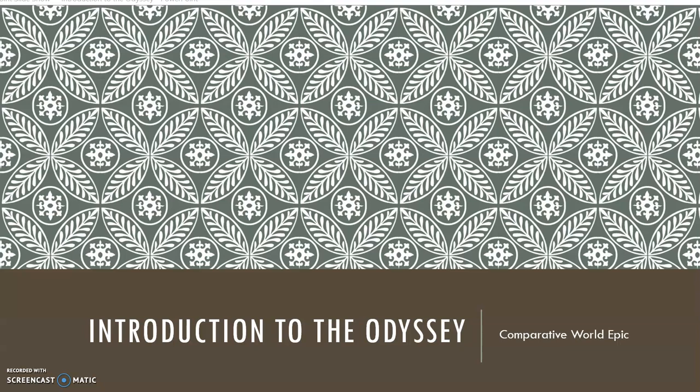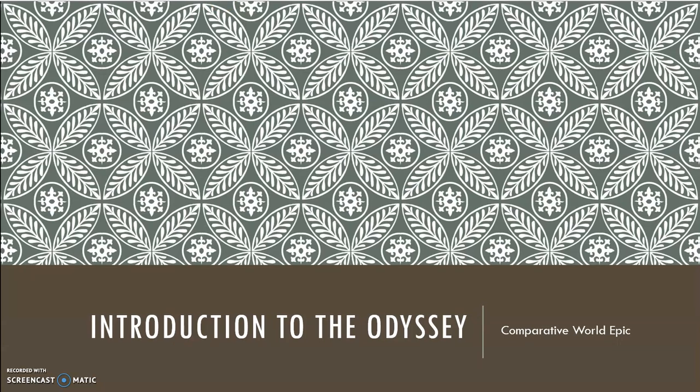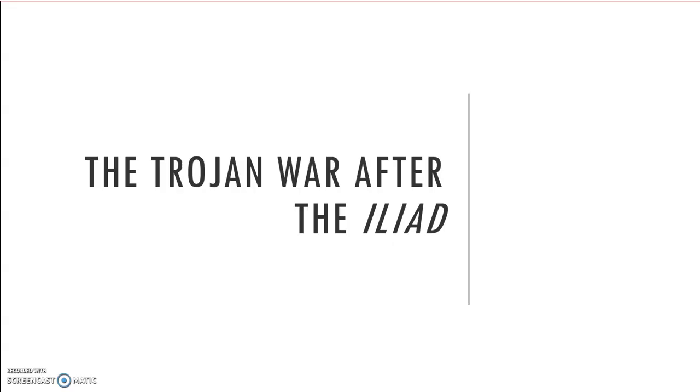On Tuesday, we will go ahead and jump right into reading the Odyssey. But first, let's spend the first part of our discussion talking about the end of the Trojan War, because as you recall, the Iliad does not end at the end of the war. The Iliad ends with the death of Hector. So we still have some ways to go before this conflict is resolved and we can move on to the next stage in the story.